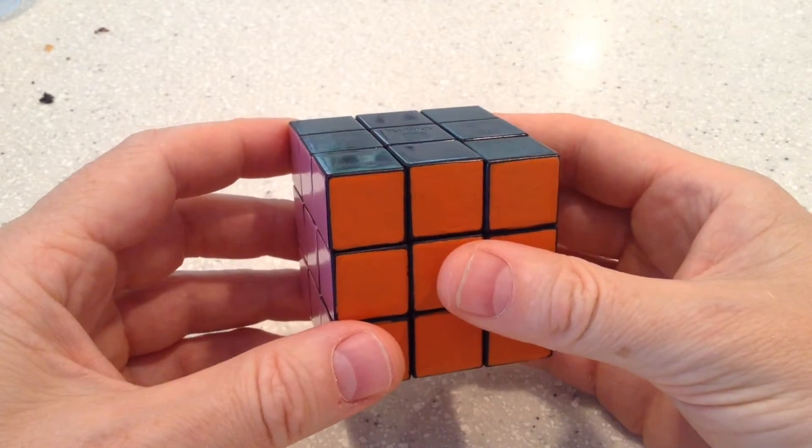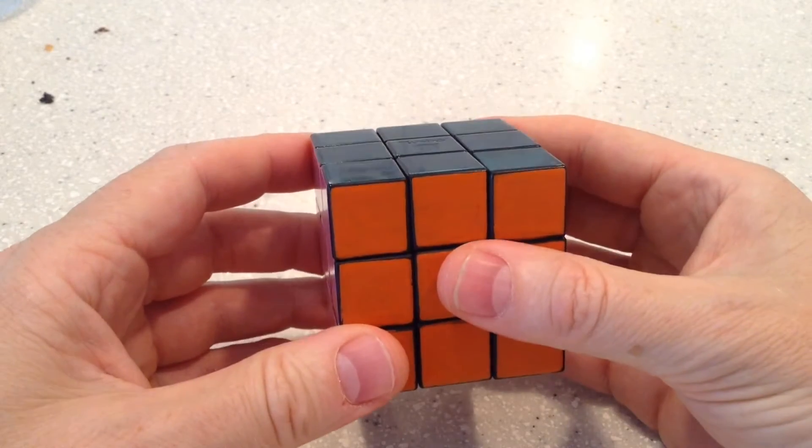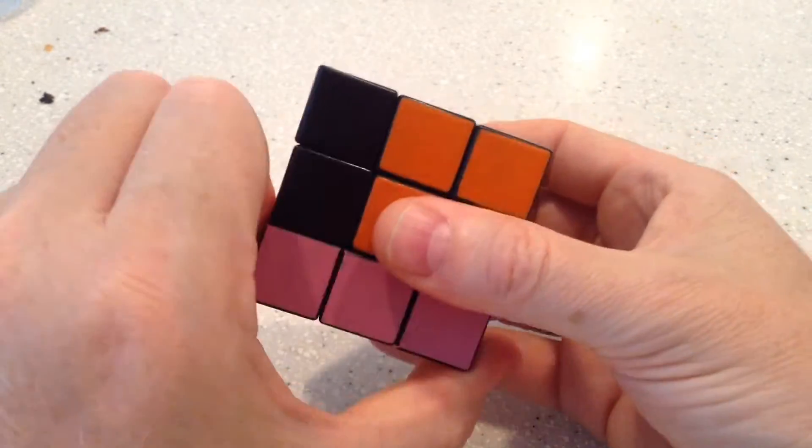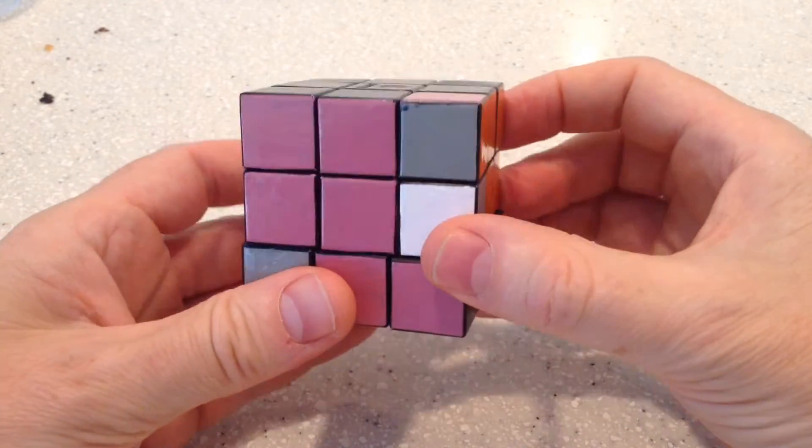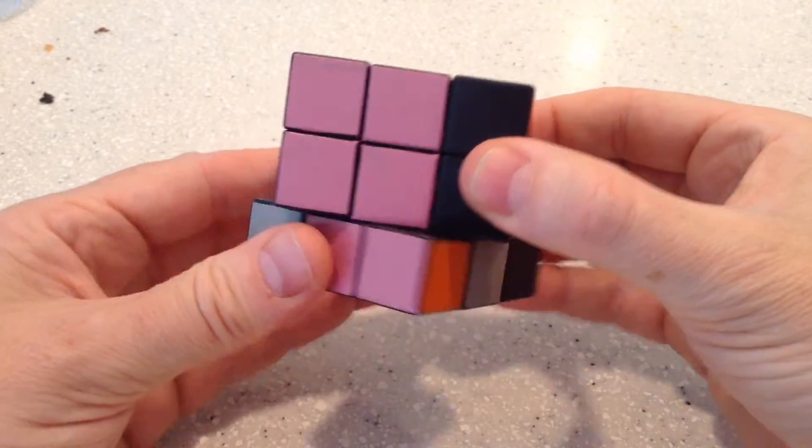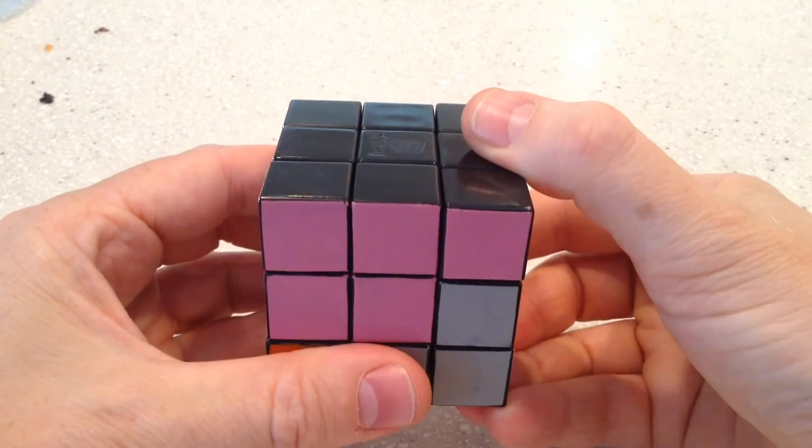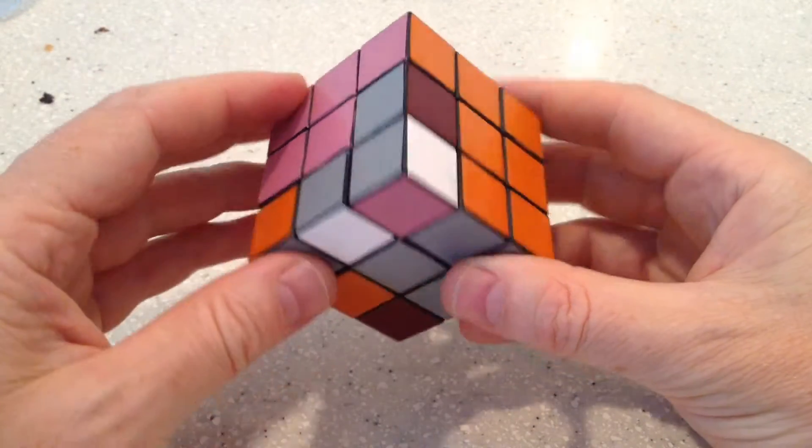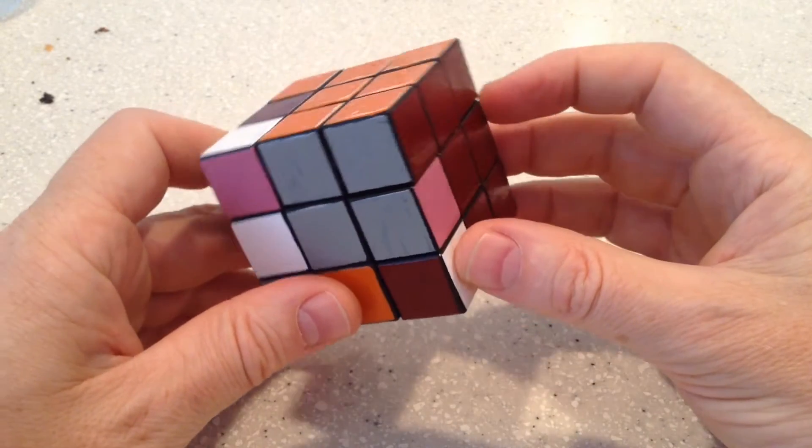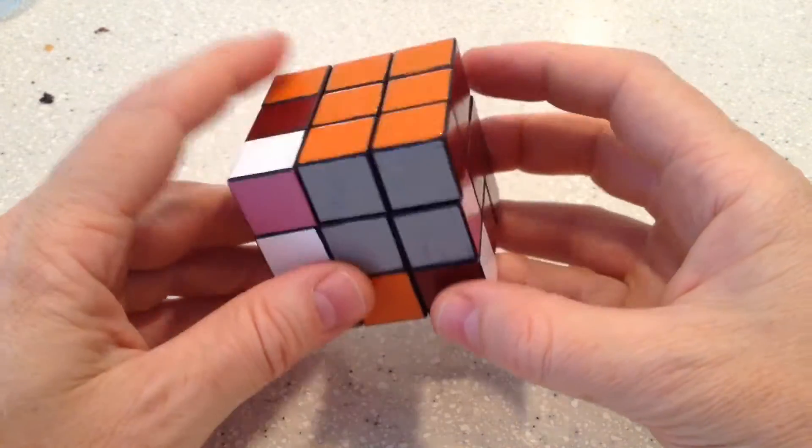So, perform that move, which takes that black corner piece out, and then we put it back in again, like this. So, we have dislodged this edge piece, but the effect on the bottom layer is quite interesting.